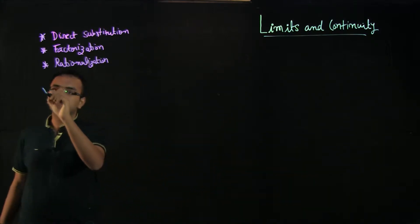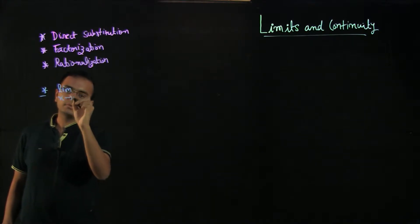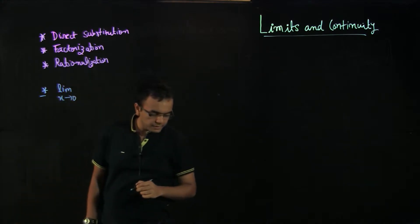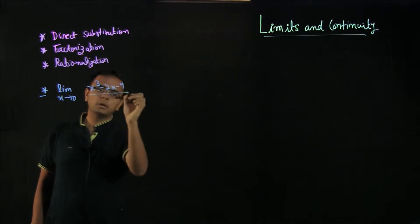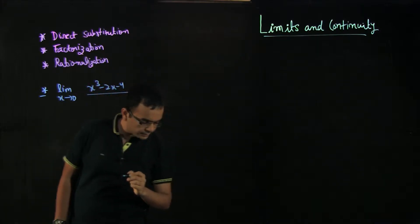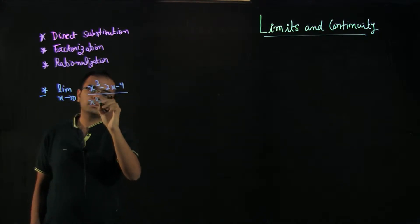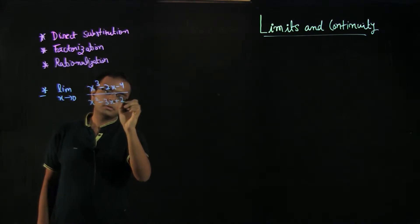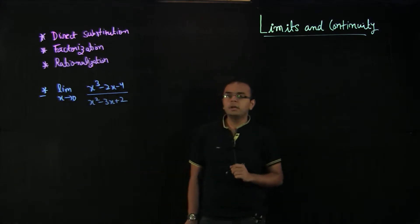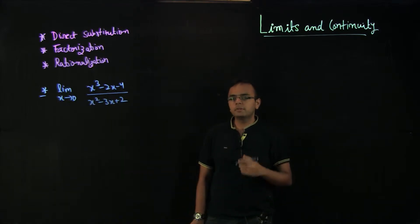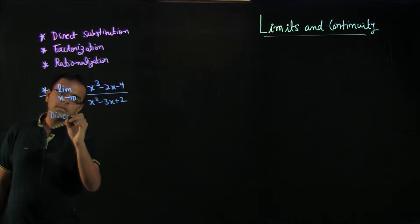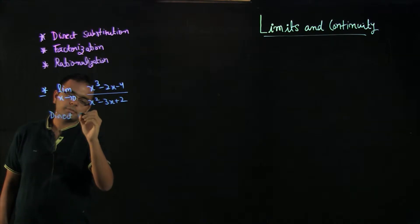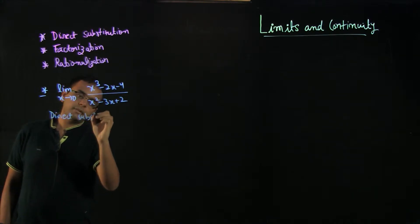Let us start with the first example. We have been asked to evaluate the limit x tends to 0 of x³ minus 2x minus 4 divided by x² minus 3x plus 2. The first thing we should always do is direct substitution — that is, we directly substitute the value of x into the expression.